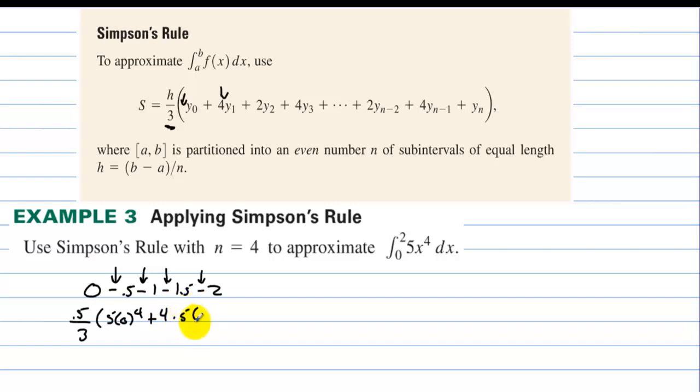We'd have 5 times 0.5 to the 4th, plus 2 times 5 times 1 to the 4th, plus, then the next one would be 4 again, times 5 times 1.5 to the 4th. And then finally plus the last one, which would be 5 times 2 to the 4th.